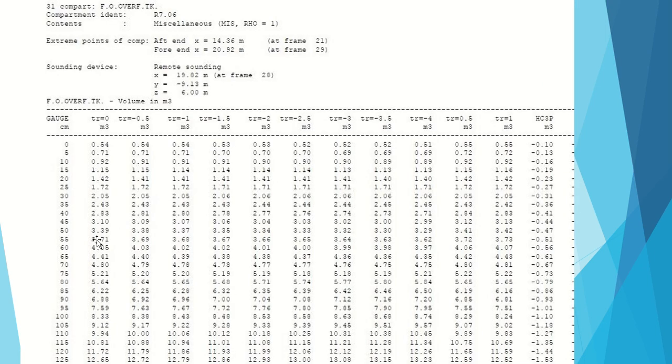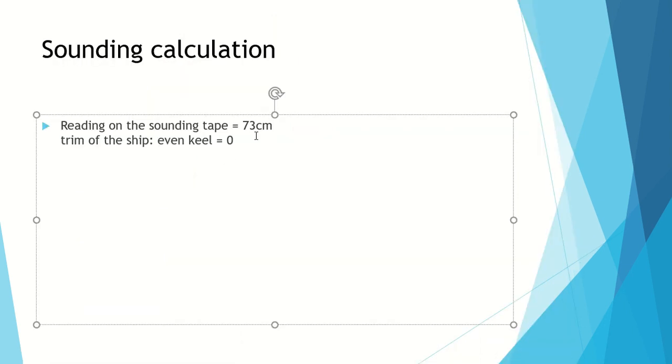Going to the sounding table, for 70 centimeters we have 4.80 meter cube. So that is the volume of fuel oil inside the fuel oil overflow tank.